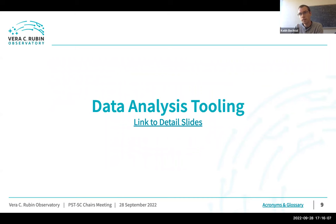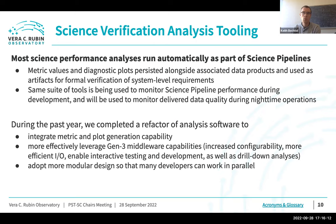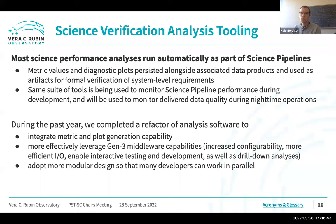The next section is on the data analysis tooling we're building. One key point is that the majority of science performance analyses we plan to implement will be run automatically as part of the science pipelines — essentially as an additional step of data processing. Once you have the data products, you do a set of studies on them, computing both metric values and diagnostic plots. These are persisted alongside the input data products, giving a direct correspondence between data products and quality attributes. During the past year we've done some refactoring of analysis software to better integrate metric and plot generation, more fully leveraging the Generation 3 middleware.